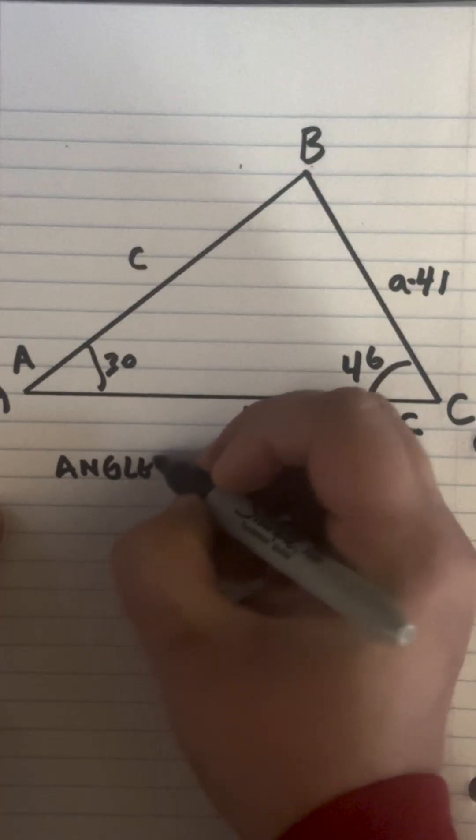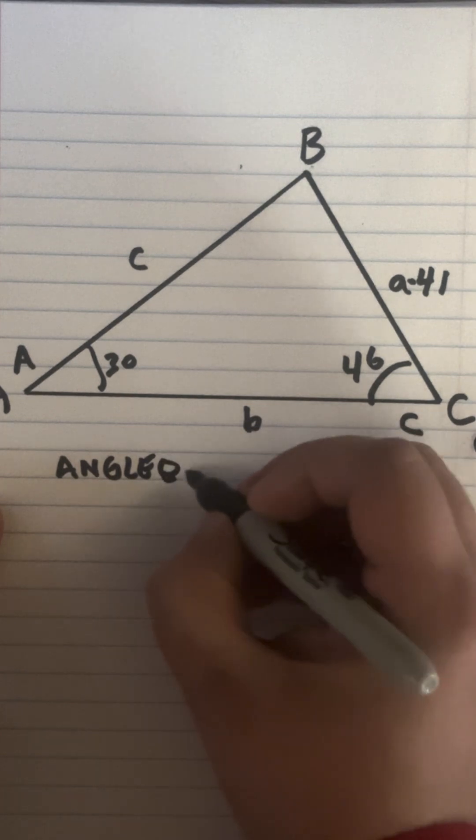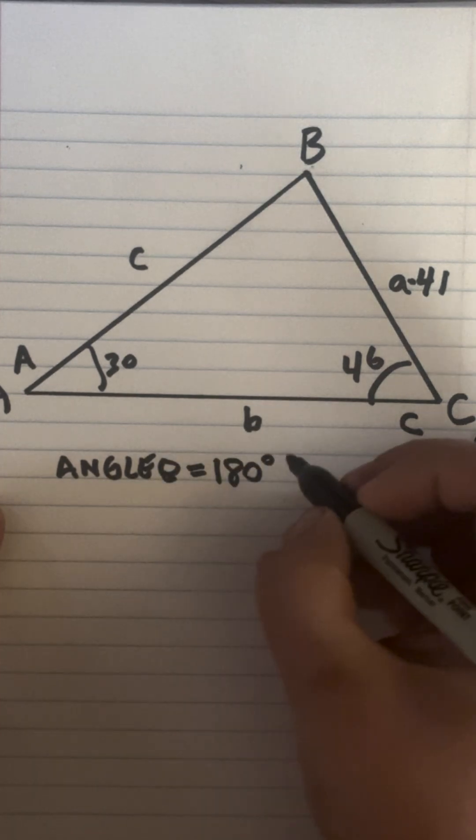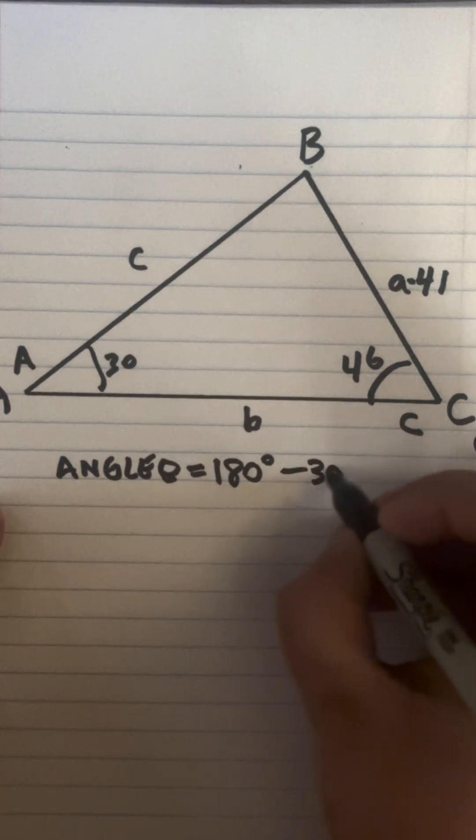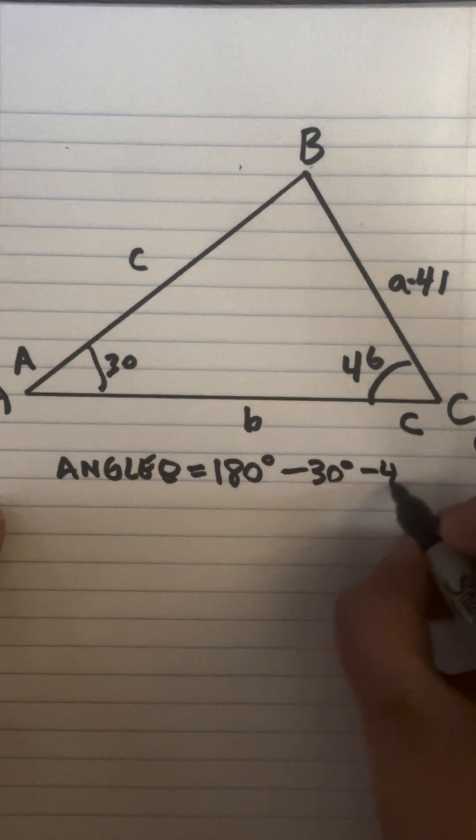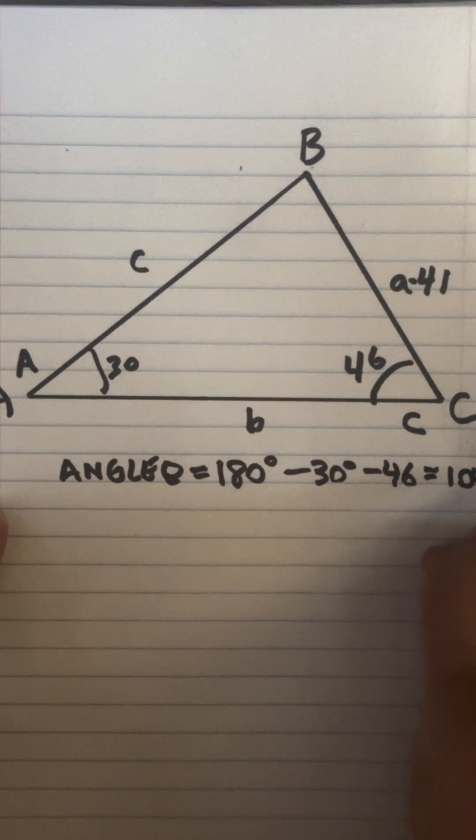So to find B, angle B is 180 degrees minus 30 minus 46, equals 104 degrees.